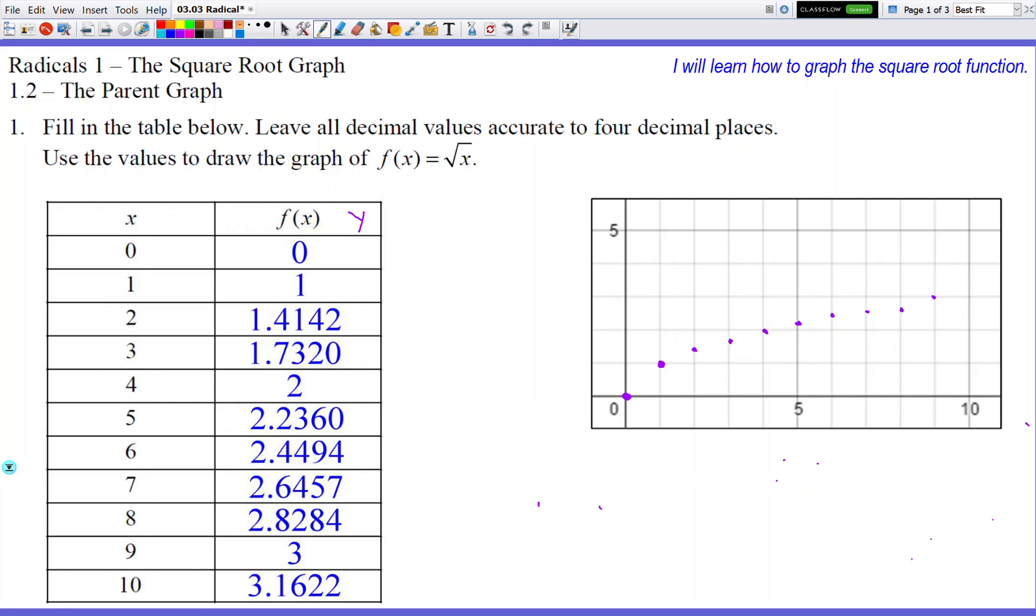And then 9, 3. Oops, maybe I didn't make it a little too high because it jumped up. It seems like it jumped up too much. Okay, maybe I can make this other dot a little better also. Okay, and then what else? 10, 3.16.